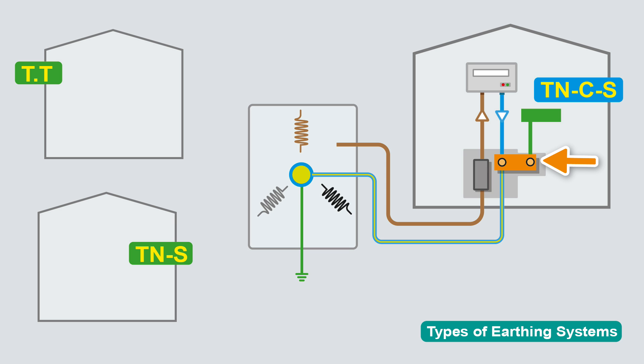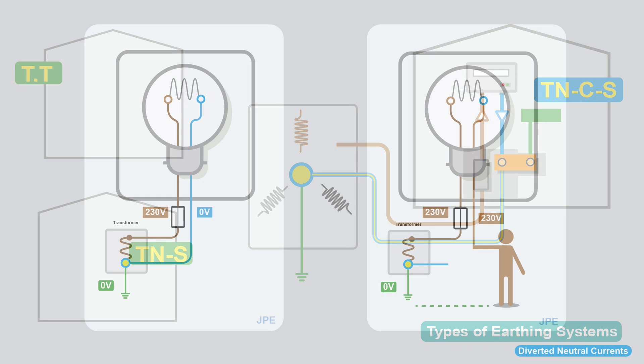And when it gets to the property, they separate the neutral and the earth in the distribution cutout. The neutral goes off to the meter and onto the circuits. And then they give you an earthing conductor, which goes onto your main earthing terminal. So the main problem with TNCS is if this combined earth neutral breaks. Let's have a look at what problems that can cause.